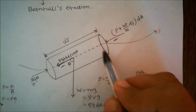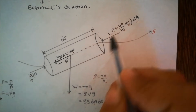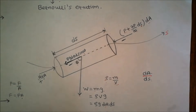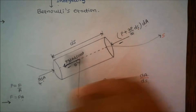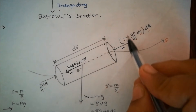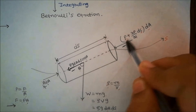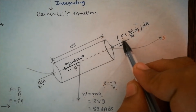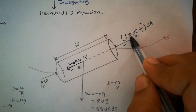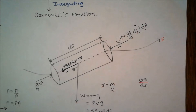On the other side, there is a force opposing the motion of the fluid. If pressure on one side is P, then pressure changes with respect to distance. So the pressure acting on the other side is P plus (∂P/∂S)·dS.